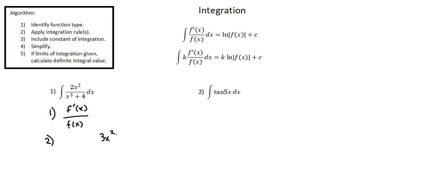The derivative of that expression is 3x squared — the plus 4 is a constant so it disappears. Notice in the numerator I don't have 3x squared, I have 2x squared. So I need to think about how to change 2x squared to 3x squared, and that occurs by multiplying by 3 over 2. The offset to multiplying by 3 over 2 is dividing by 3 over 2, which is the same as multiplying by 2 over 3.